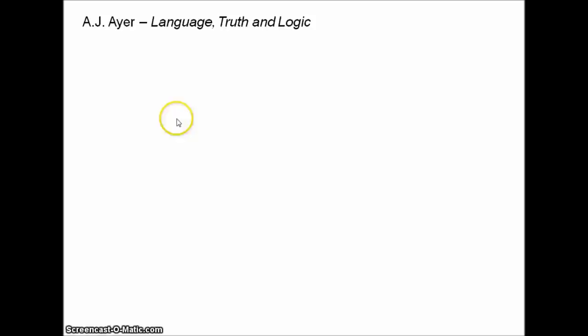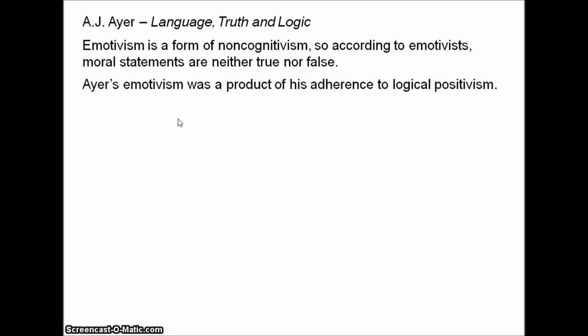Logical positivism flourished around the early to mid-1900s, and its adherents were aggressively scientific. They were very impressed with the major developments in science, mathematics and logic, and they felt that philosophy hadn't kept up with these developments. They felt that many of the traditional philosophical debates were just a waste of time, so they wanted to make radical reforms to philosophy.